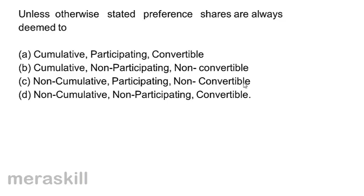Unless otherwise stated, preference shares are always deemed to be: A. cumulative, non-participating, non-convertible  B. cumulative, non-participating, non-convertible  C. non-cumulative, participating, non-convertible  D. non-cumulative, non-participating, convertible. Unless otherwise stated, preference shares are cumulative, non-participative, and non-convertible. Correct option is B.